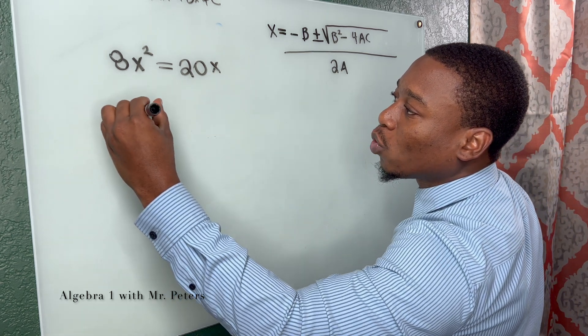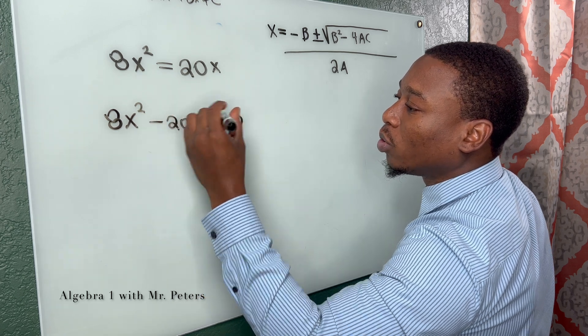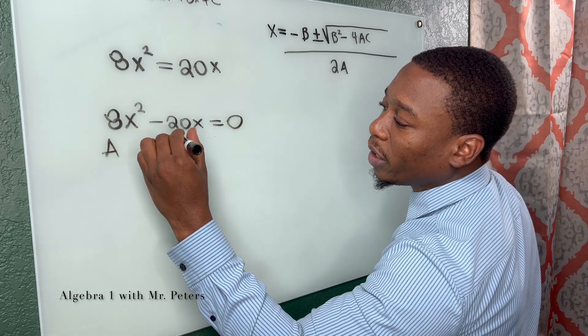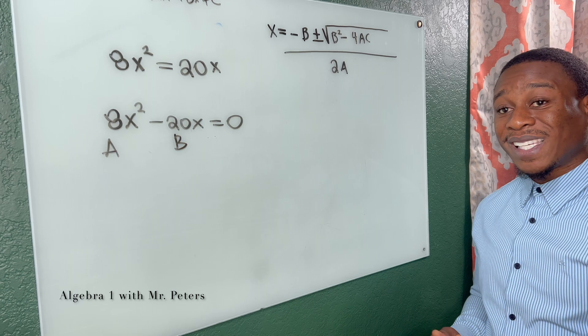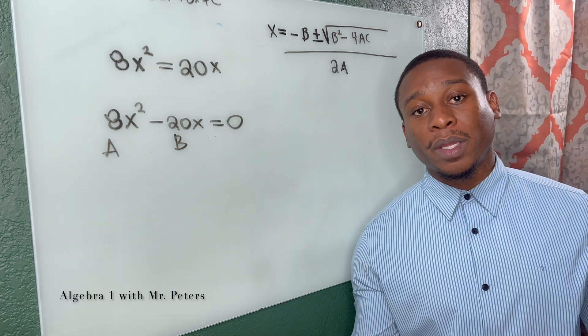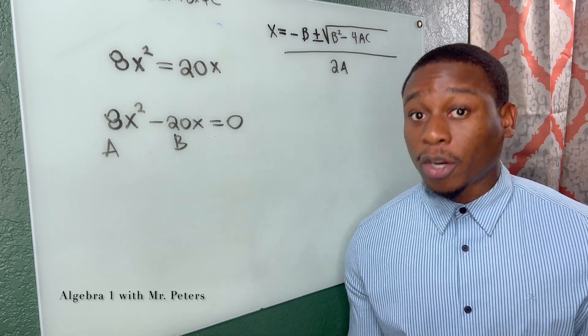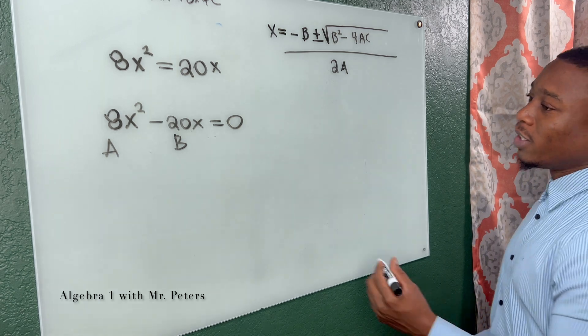So let's get them on the same side. So now we have 8x squared minus 20x is equal to zero. Here is our a, the x squared term. Here is our b, the term with just a single variable. So what you notice is there is no c. And guys, that's going to happen. If you're watching this video right now, I want you to know they will do that. You're not crazy. What you're going to do is what I do right now. So let's get to it.